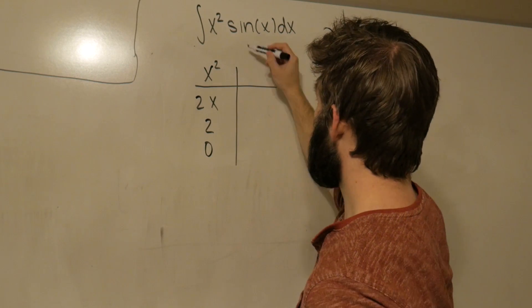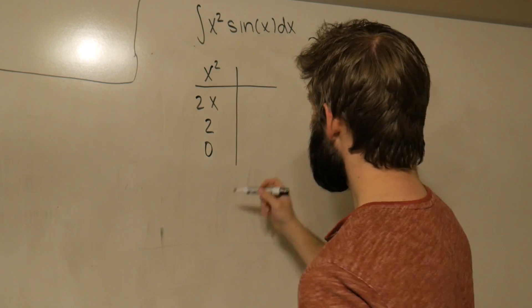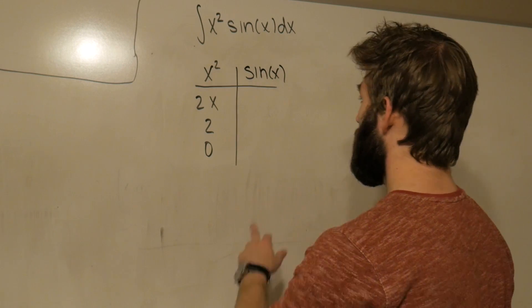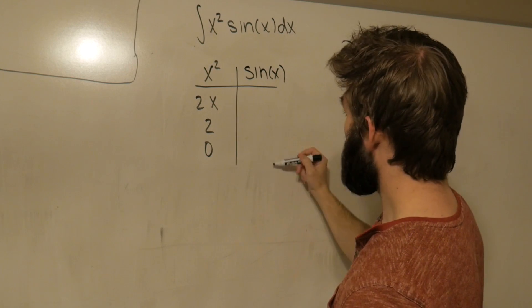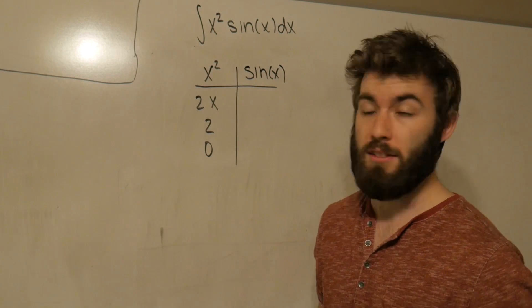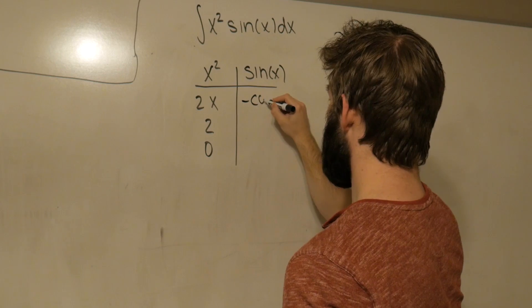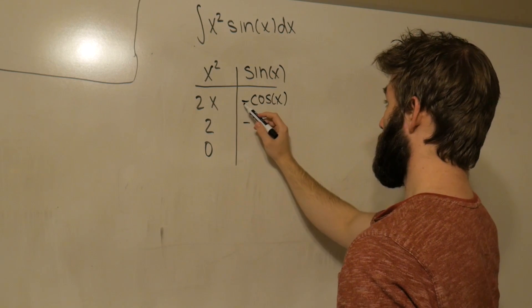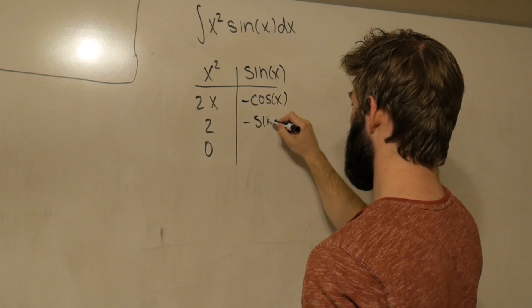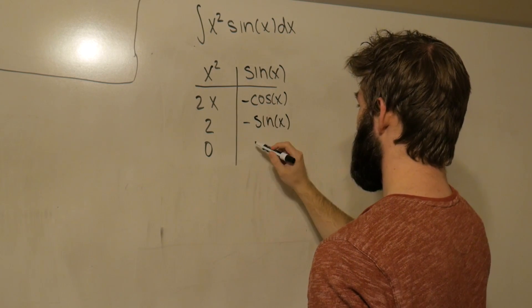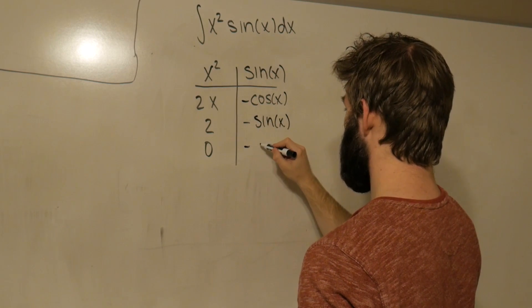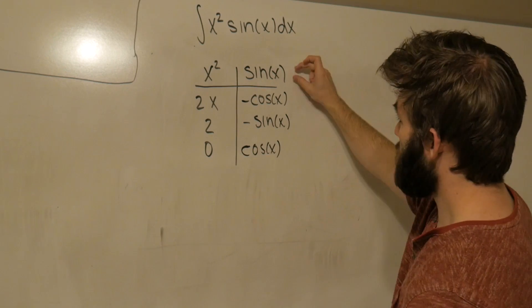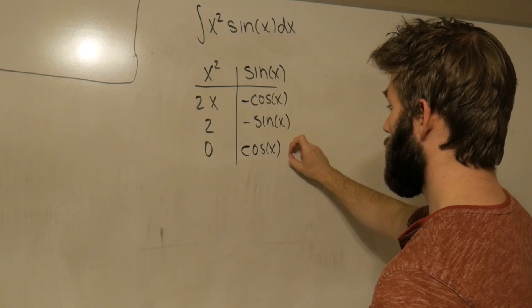On the right hand side, we're going to be integrating what's left over. So that means we're going to be integrating sin(x) with respect to x. And we're going to integrate this as many times as we took derivatives of x². So the integral of this is just going to give us -cos(x). Integral of -cos(x) is going to be -sin(x). And then we have another minus, but this is just going to be a regular cos(x). So to reiterate, we're just taking integrals of these, okay?